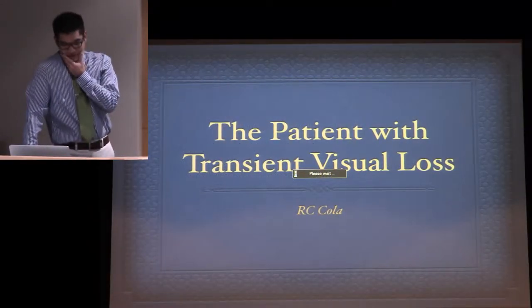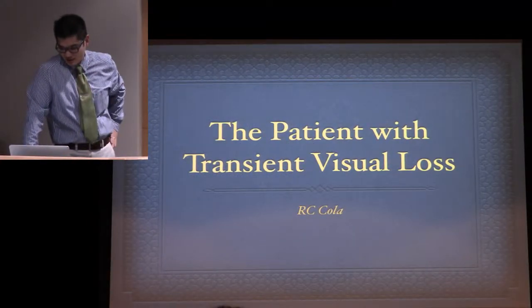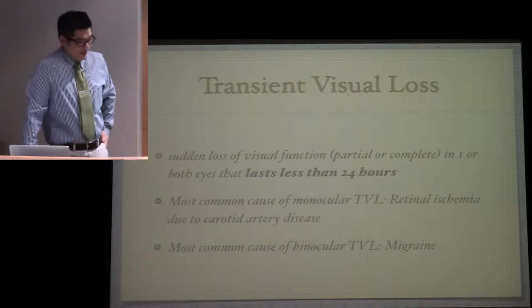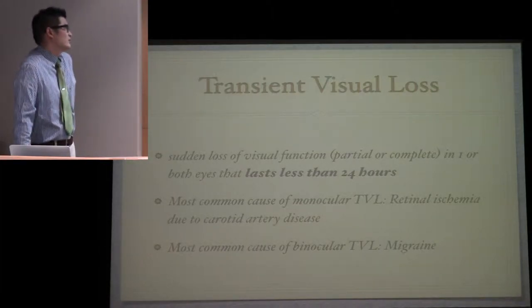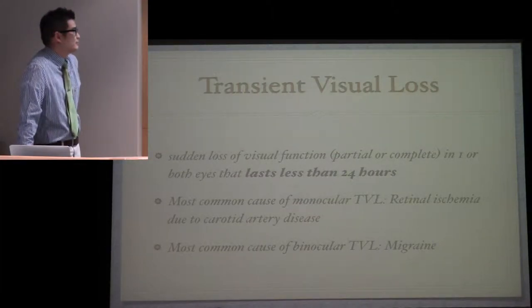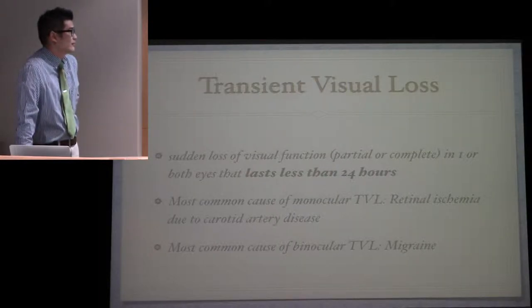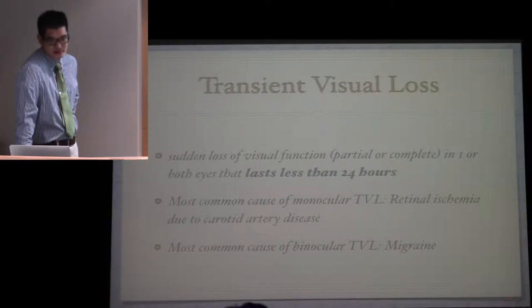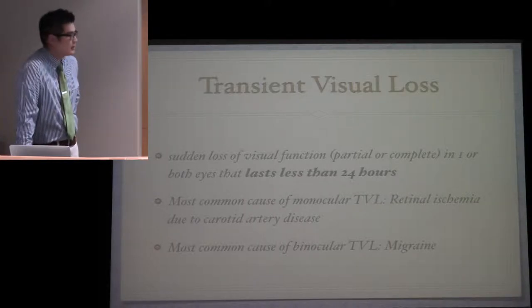We're going to talk about transient visual loss. Let's start by defining what it is: a sudden loss of visual function, partial or complete, in one or both eyes. However, it lasts less than 24 hours - that's the key right there.